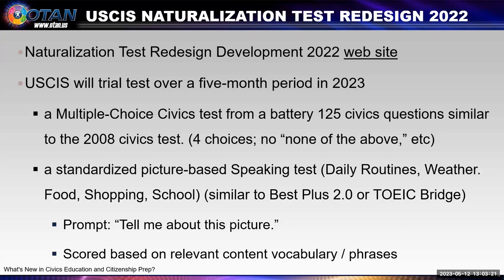They're going to draw from a battery of 125 civics test questions, very similar to the citizenship questions on the 2008 civics test, and they're going to be delivered on a computer. As opposed to when an applicant goes to their citizenship interview now — where the USCIS officer asks the questions and the applicant responds — during this pilot, civics questions will be delivered by computer. There will be 10 questions with four answer choices, and there is always one specific correct answer.